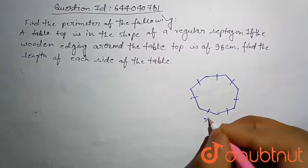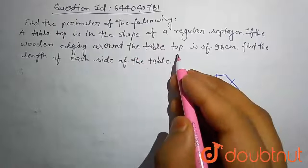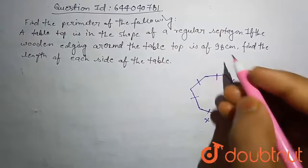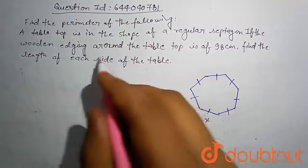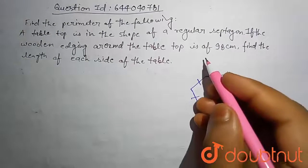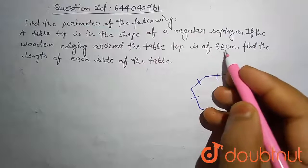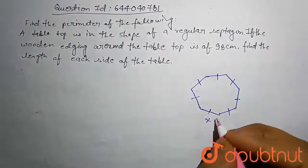Let's assume each side is x. If the wooden edging around the tabletop is 98 centimeters—meaning the wooden edging around this regular septagon is 98 centimeters—find the length of each side of the table.